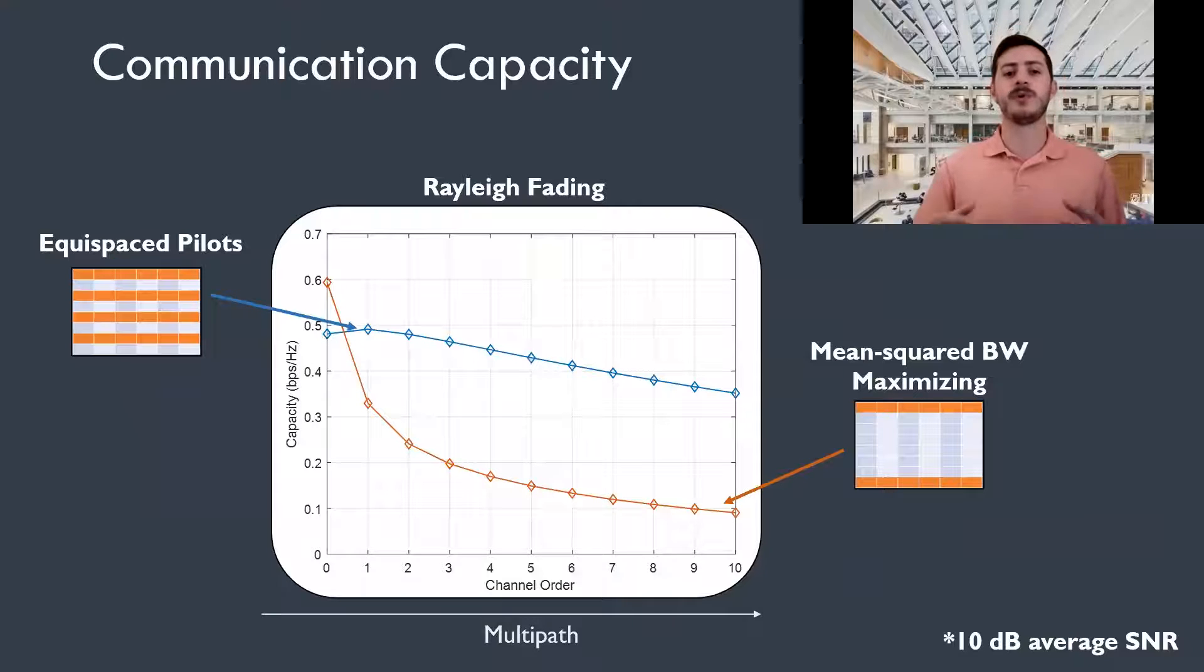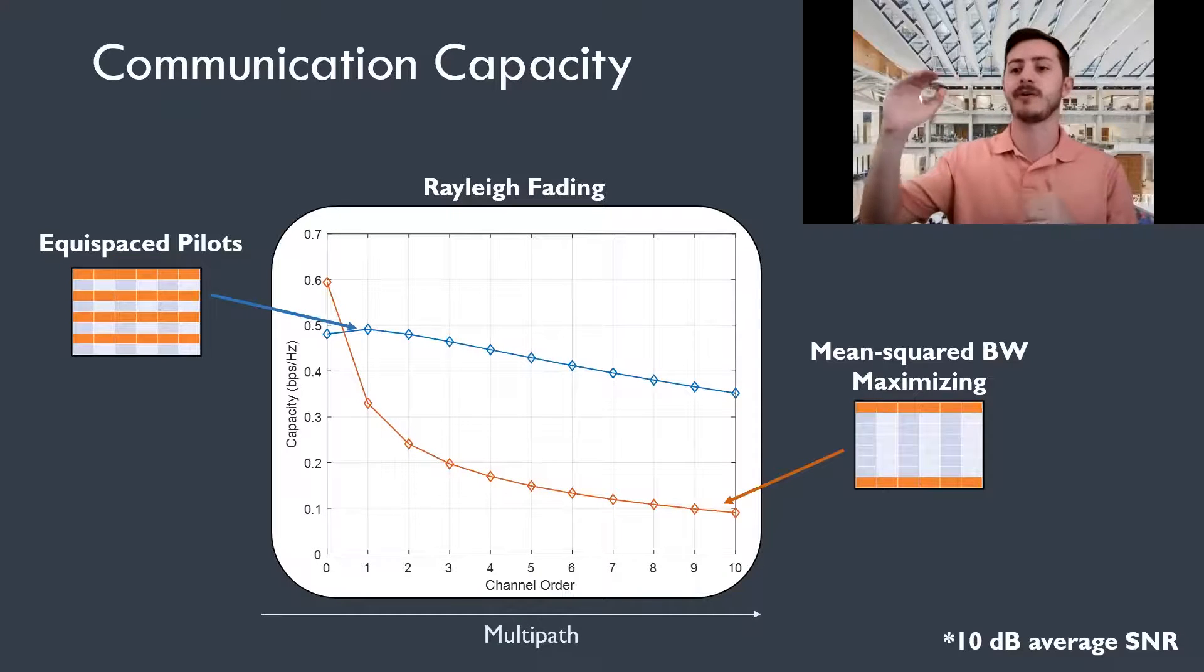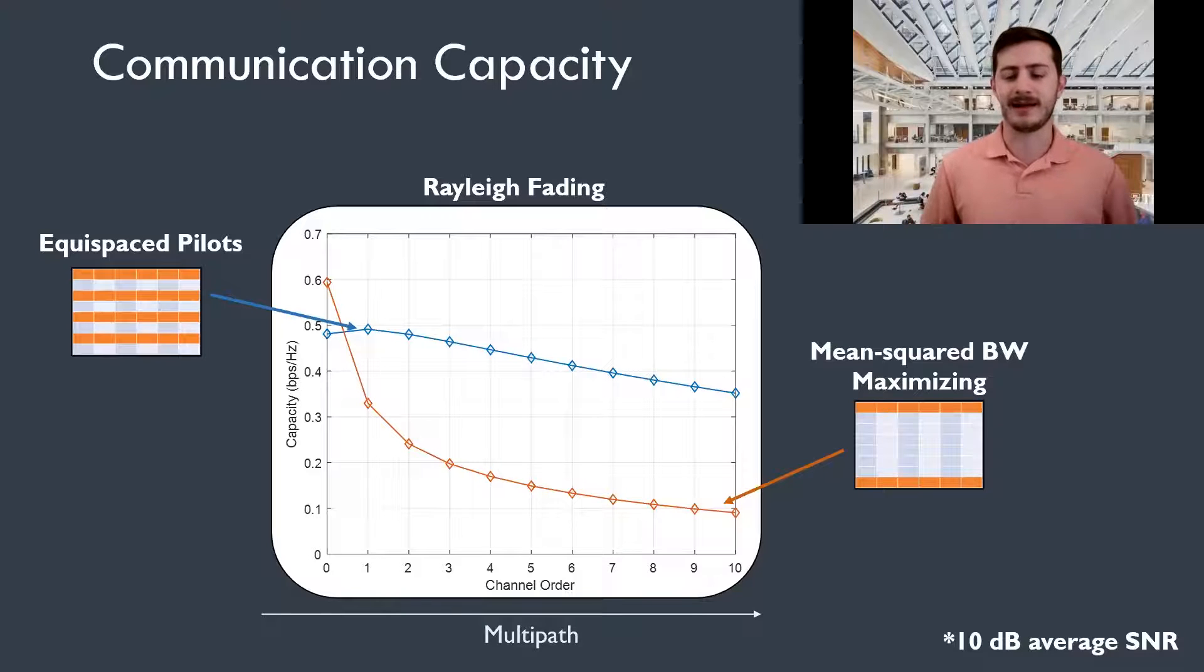So what can we do with this analysis? Well, here we can compare two candidate signals. The first on the left is our equally spaced pilot signal, and the one on the right only has two pilots placed into the two outermost subcarriers, but with the same power budget. And this design maximizes the mean squared bandwidth. So looking at the performance, the mean squared bandwidth maximizing signal performs best when there's no multipath, but as soon as multipath is introduced, its performance degrades very quickly.